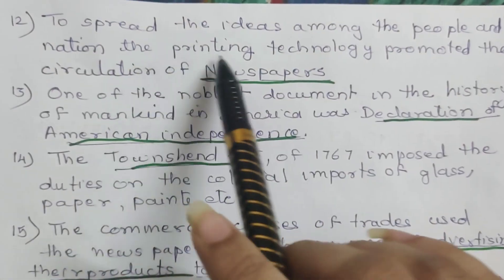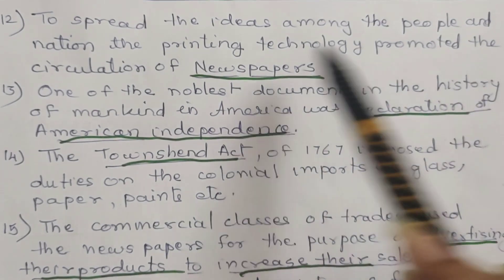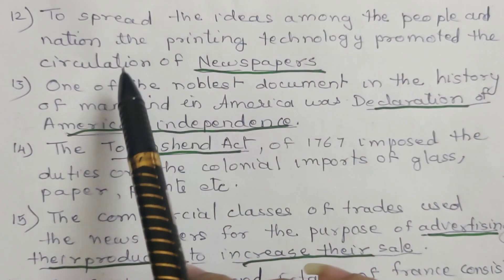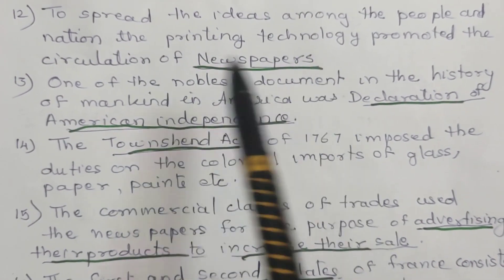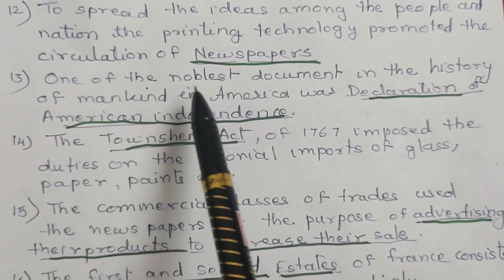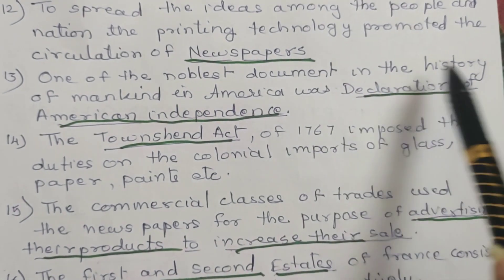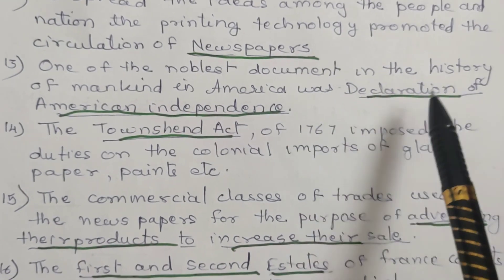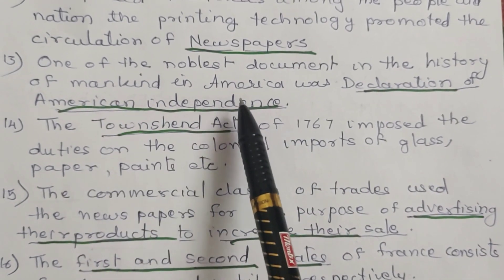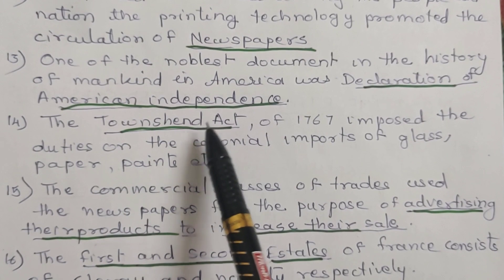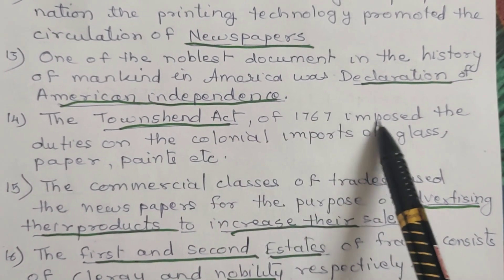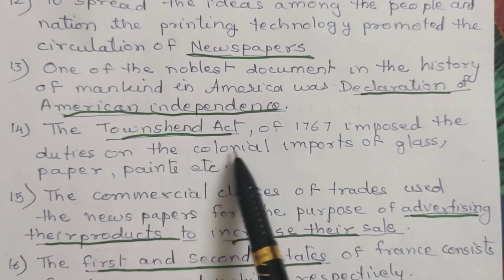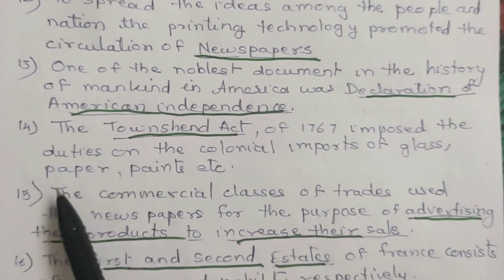12. To spread ideas among the people and nation, the printing technology promoted the circulation of newspapers. 13. One of the novel documents in the history of mankind in America was the Declaration of American Independence. 14. The Townshend Act of 1767 imposed duties on the colonial imports of glass and papers.